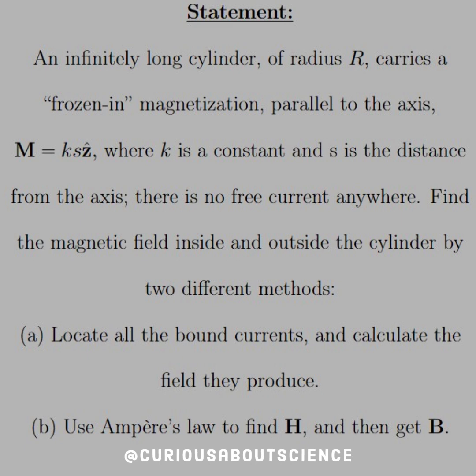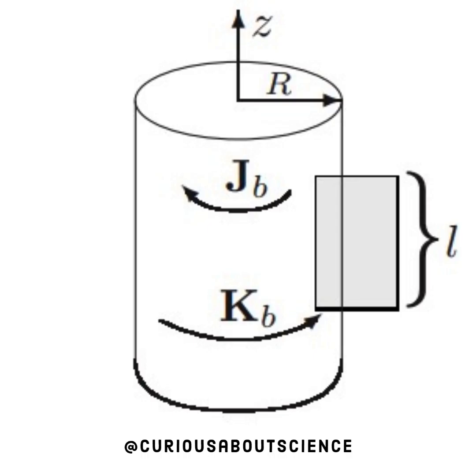Find the magnetic field inside and outside the cylinder by two different methods. Method A: locate all the bound currents and calculate the field they produce. Method B: use Ampere's law to find H, and then get B, where H is the auxiliary field.